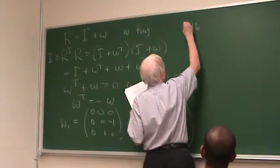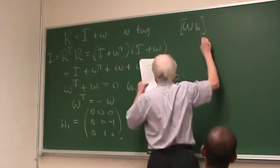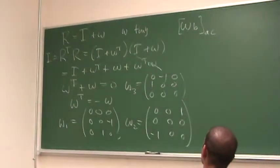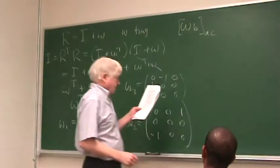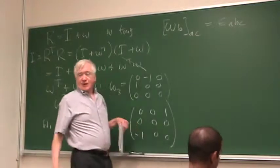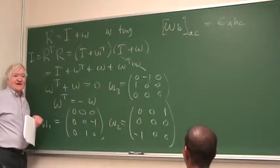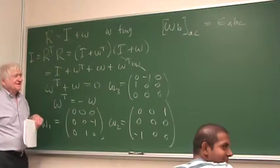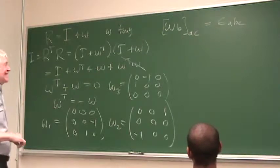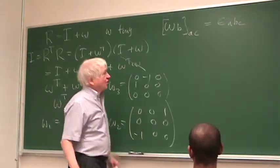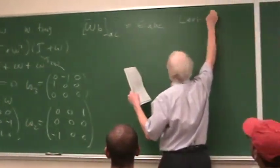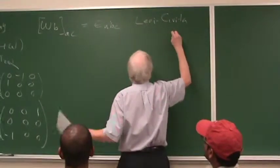Notice that if we take omega_B, consider this a matrix, and we take the AC matrix element of it. In other words, row A, column C, what do we get? What we get is epsilon_ABC. So this is called the Levi-Civita symbol.